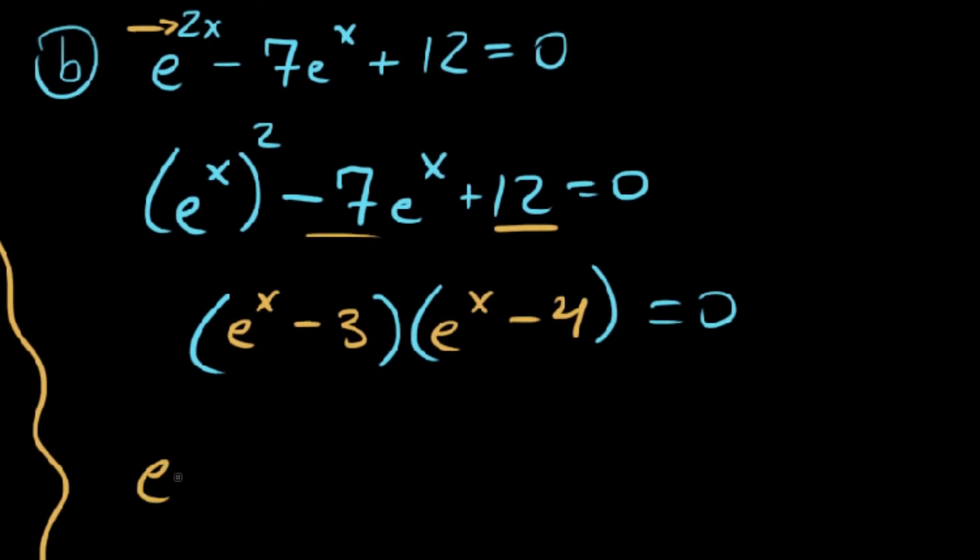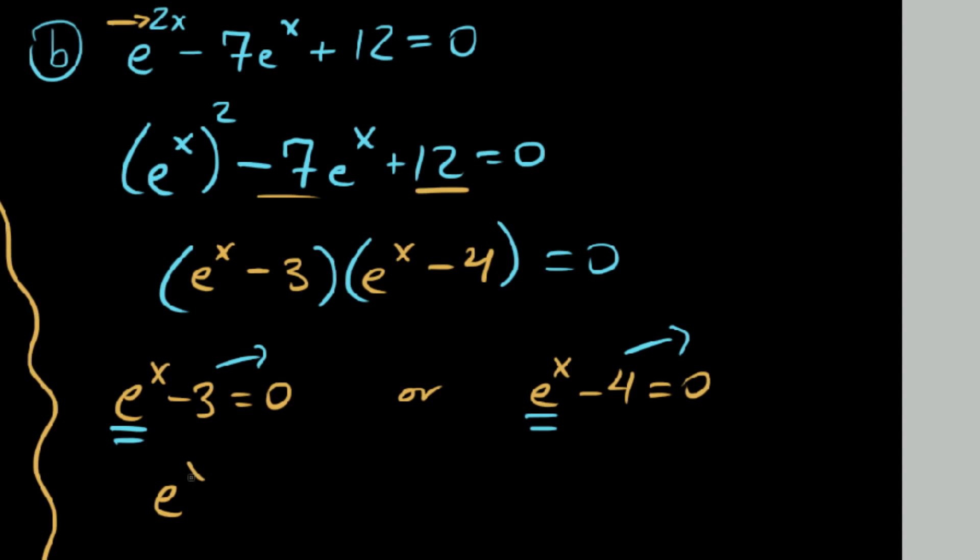So since we have these two quantities now, we can say e to the x minus 3 equals 0 or e to the x minus 4 equals 0. So now solving these exponential expressions, we have to isolate these exponential phrases. So if I kick this 3 over to the other side or I kick this 4 over to the other side, each equation becomes e to the x equal to positive 3 and e to the x equals positive 4, respectively.